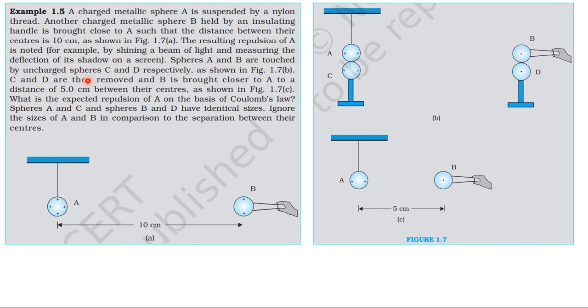Spheres A and B are touched by uncharged spheres C and D respectively, as shown in figure 1.7B. C and D are then removed and B is brought closer to A to a distance of 5 cm between their centers as shown in figure 1.7C.